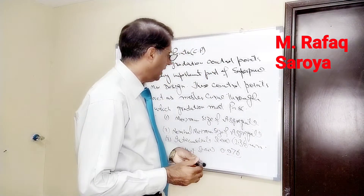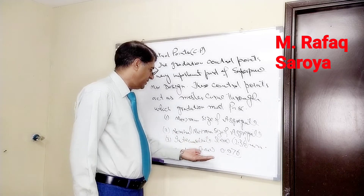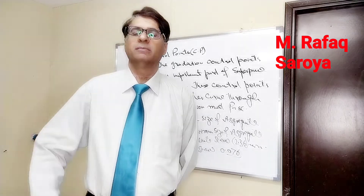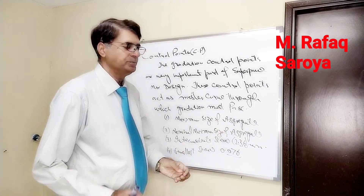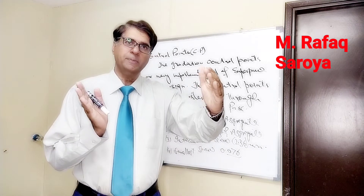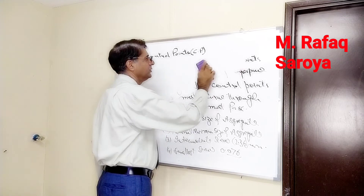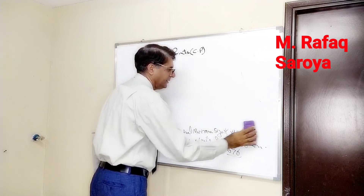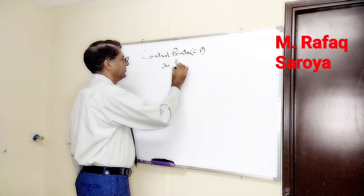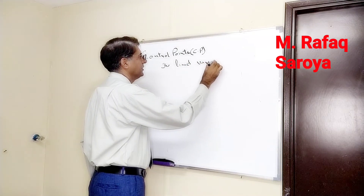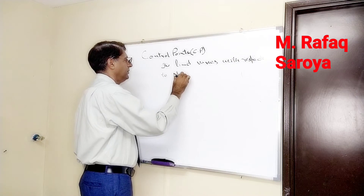The question arises: we have defined the maximum size, nominal maximum size, intermediate sieve, and smallest sieve — but where do we place those points and what should the limits be? The limits, meaning the span between these points, depend upon the nominal maximum aggregate size. So the limits vary with respect to nominal maximum aggregate size.